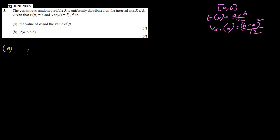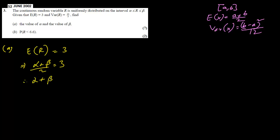So question (a) asks for the expected value of the random variable, given as 3. Therefore, alpha plus beta divided by 2 equals 3, which gives us alpha plus beta equals 6 — this is equation 1.